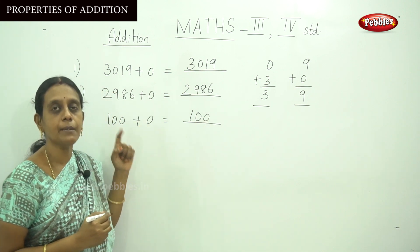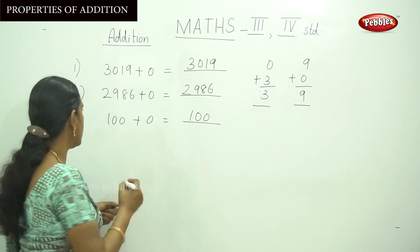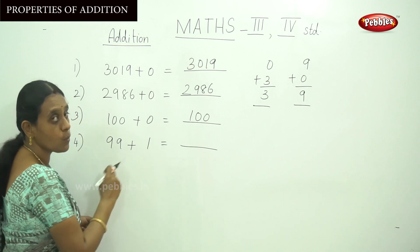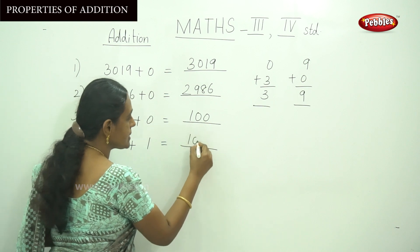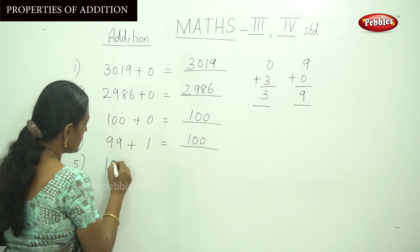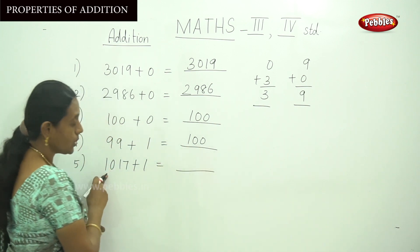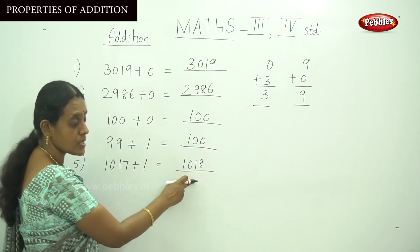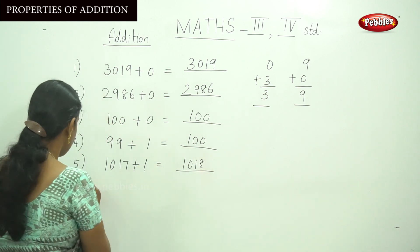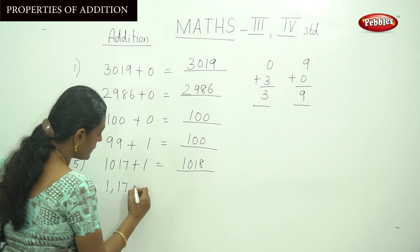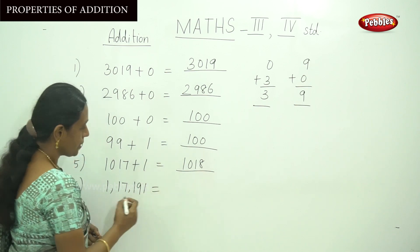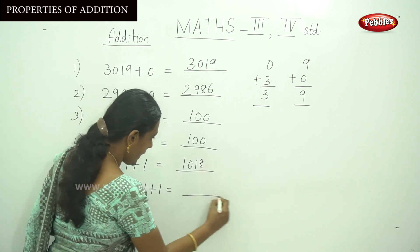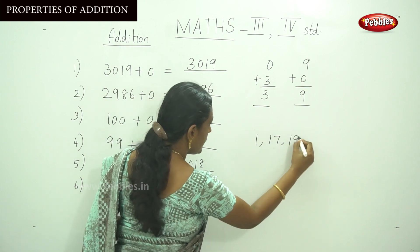The second property is if you add 1 to the given number. For example, 99 plus 1 gives the next successor number of 99, so the answer is 100. And the next sum: 1017 plus 1, the answer will be 1018 because that is the successor number of 1017. Suppose the number is a 5-digit or 6-digit number, for example 117191, and you add 1 to this number.